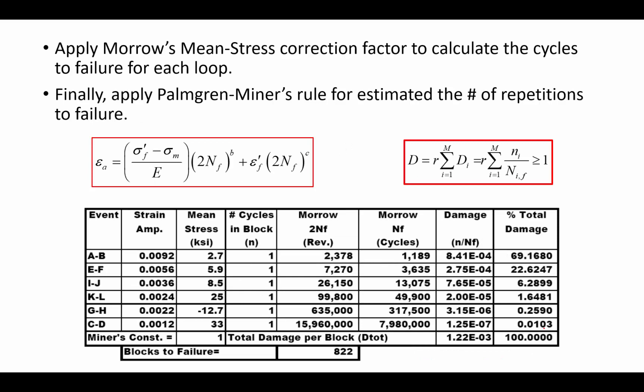So, with that information, we'll apply Morrow's mean stress correction factor, and we'll calculate the cycles to failure that would be required for each of the loops that we have. And then finally, we'll apply Palmgren-Miner's Rule to estimate the number of repetitions to failure, similar to our first example for VAL loading. So, that's what we do.